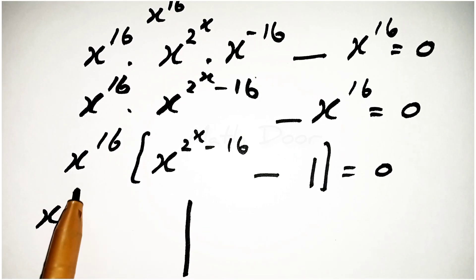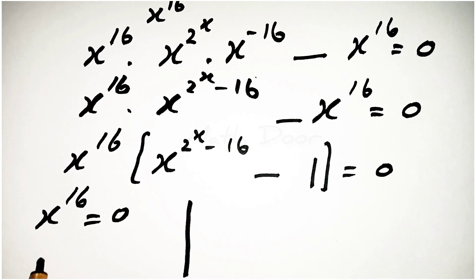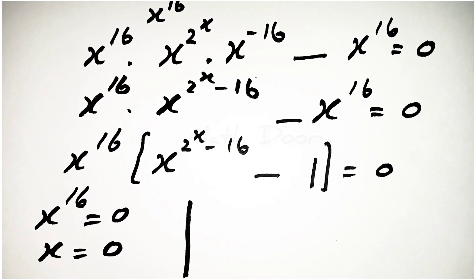Now we have two factors. One is x power 16 is equal to 0, by which x has the value 0.